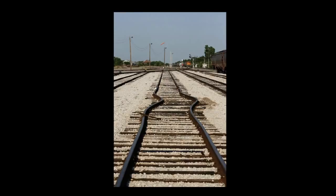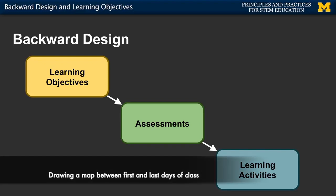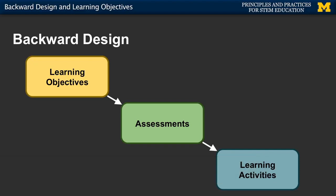Many of the frustrations we encounter as instructors result from misalignment in our courses. We walk in on the first day of class excited to share our knowledge and passion with our students. We want to encourage them to engage with class material and inspire them to pursue further learning in our fields. One of the big challenges is that there's not necessarily a clear map for how to do these things. This video will provide a brief overview of backward design — essentially the process of drawing a map between the first day and the last day of your course, so that your students leave knowledgeable, skilled, and passionate about your discipline.